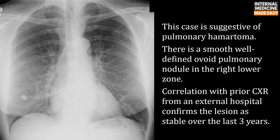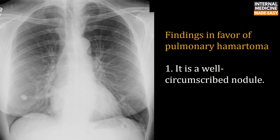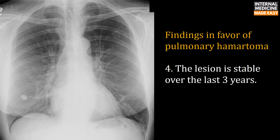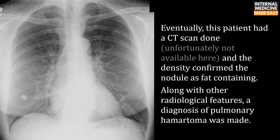This case is suggestive of pulmonary hematoma. There is a smooth, well-defined ovoid pulmonary nodule in the right lower zone, confirmed as stable over the last three years on prior chest X-ray. Findings in favor of pulmonary hematoma: it is a well-circumscribed nodule with a smooth margin, there is no cavitation, and the lesion is stable over three years. CT scan confirmed the nodule as fat-containing.